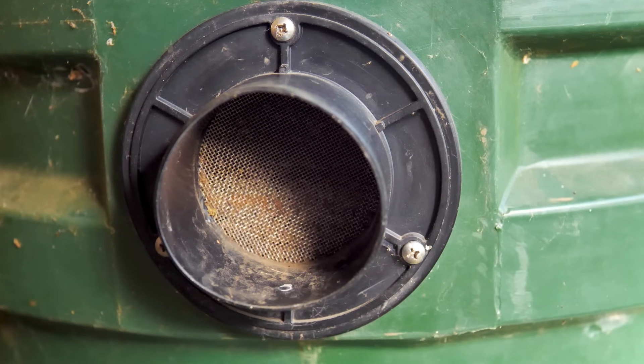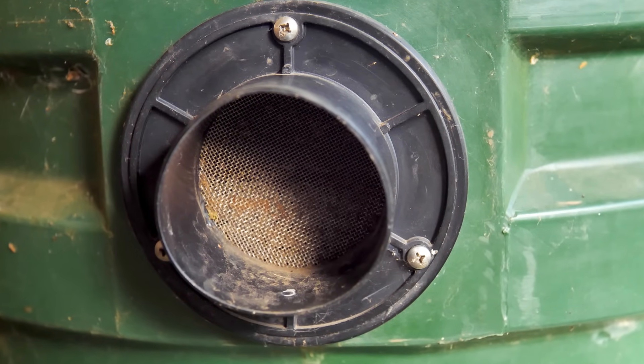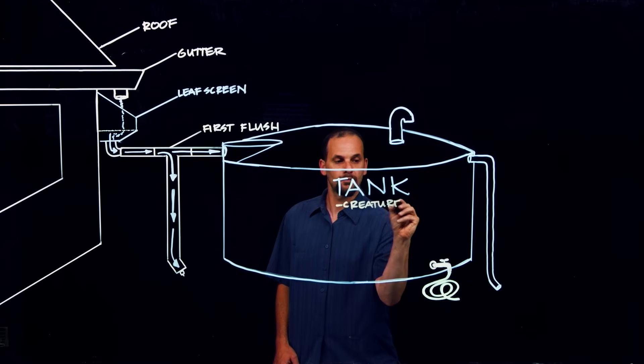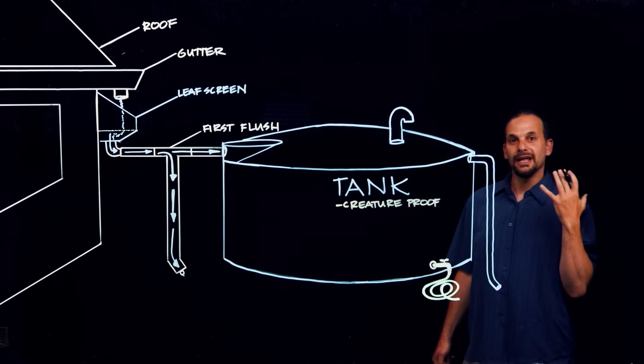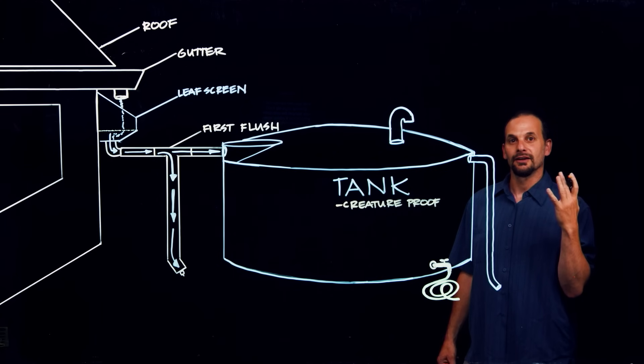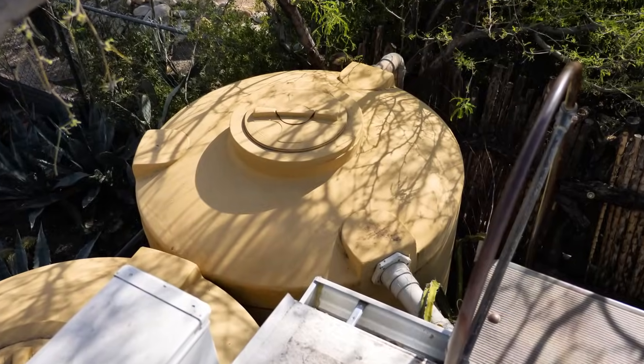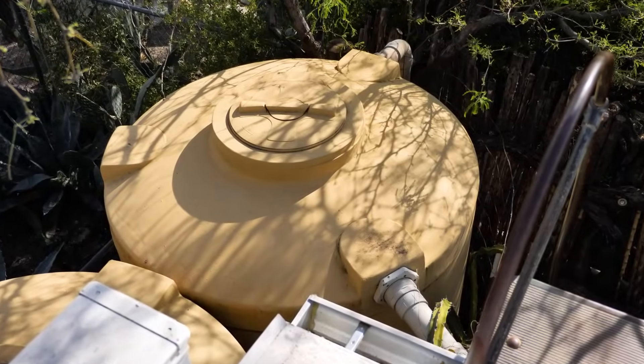So, all overflow pipes, vents, and outlets of any kind have to be screened to keep critters out. Now, if light can get into your tank, you're going to get algae growing, which also will degrade your water quality if you're going for potable drinking water.